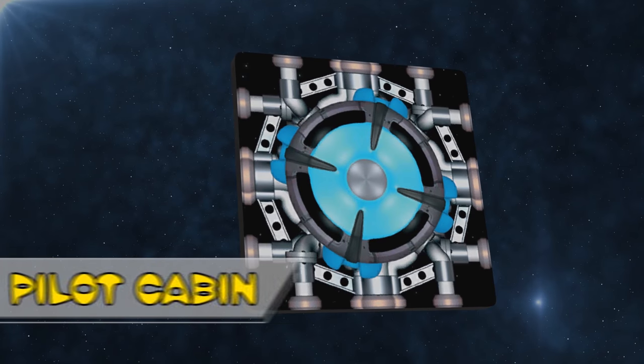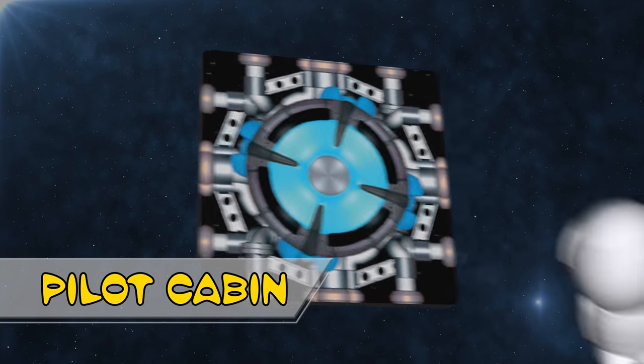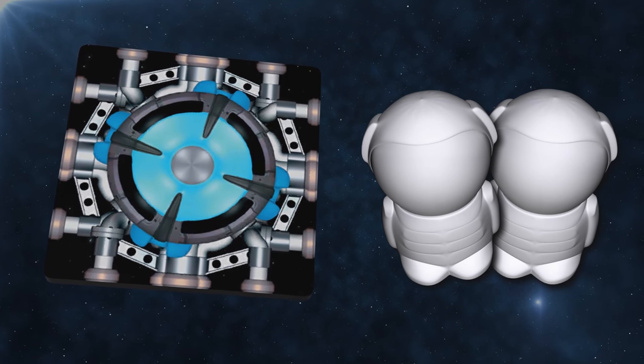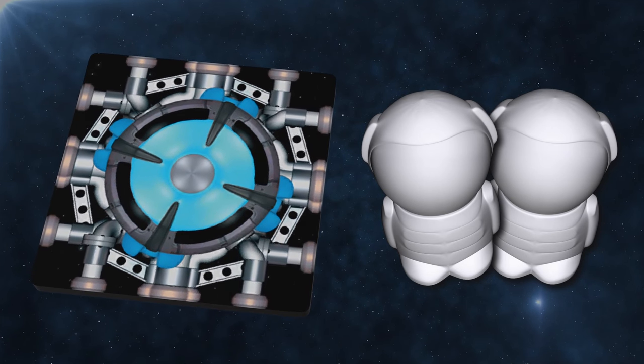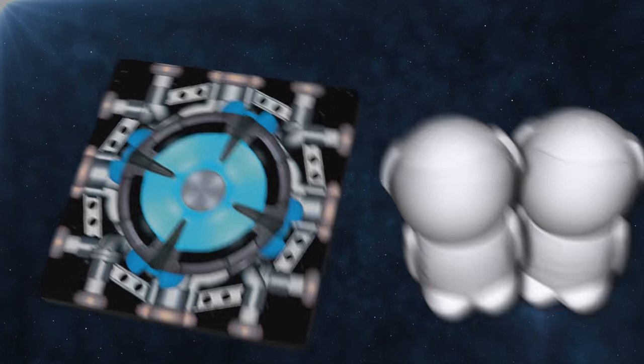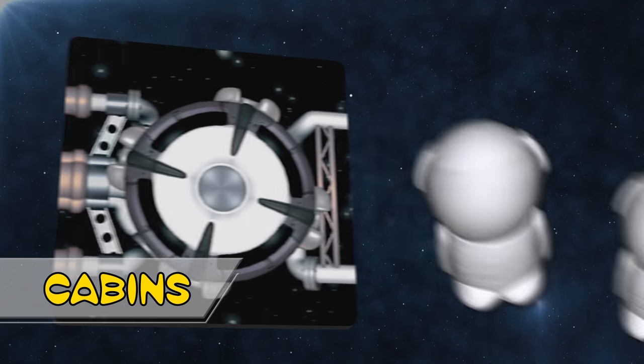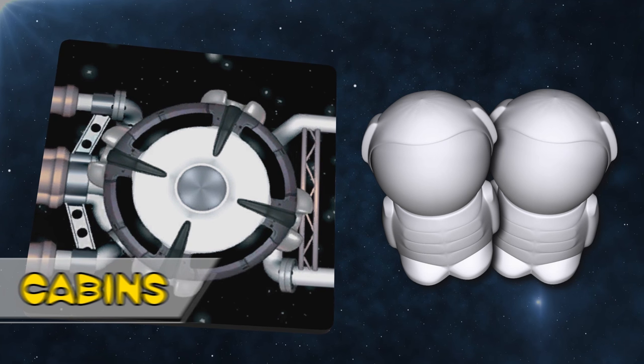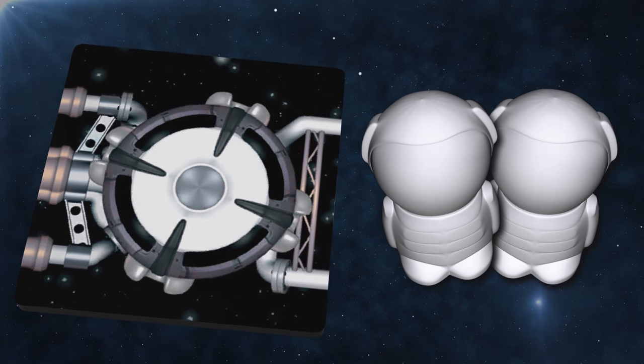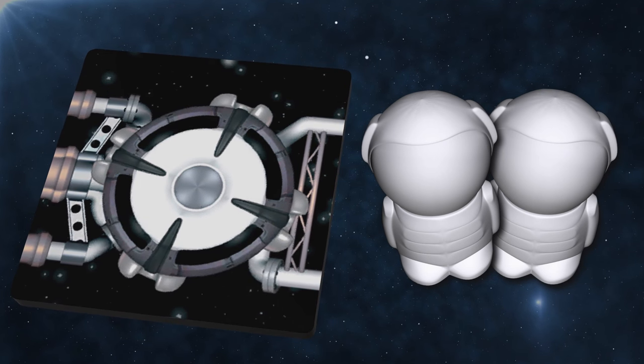Your starting component is your pilot cabin. It has space for two crew members and it has four universal connectors, making it easy to attach other components to it. This is an additional cabin. Each of these allows you to add two more crew to your ship. Having more crew is better for the flight so you want as many cabins as possible.